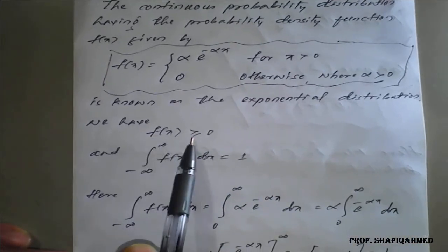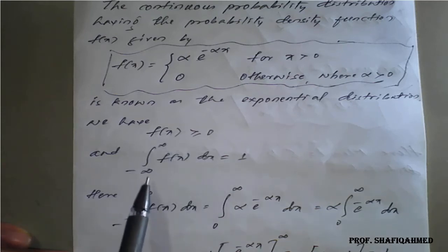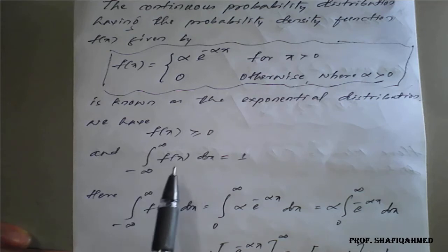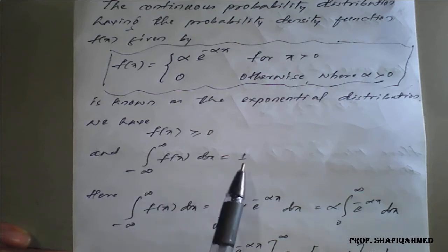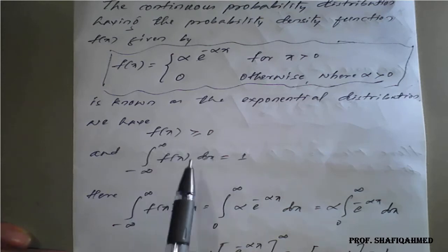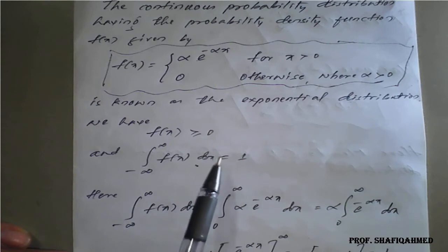As we know, the conditions of a probability density function are: first, f(x) should be greater than or equal to 0 (non-negative); and second, the integration from minus infinity to plus infinity of f(x) dx equals 1. If both conditions are satisfied, we can conclude it is a probability density function.